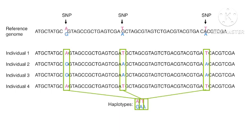These three SNPs together are inherited in individuals 1, 2, 3, and 4. In individual 1 and 4, the ATT haplotype is present. In individuals 2 and 3, the GAA haplotype is present. ATT is the normal reference, whereas in individuals 2 and 3 there is variation at these positions.